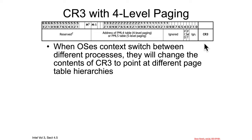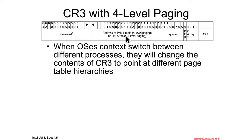You should be aware that when an operating system changes context between different processes — in order to represent different virtual memory address spaces, with different physical memory mapped at potentially even the same virtual address — the operating system is going to be rewriting CR3 each time it's swapping in and out different processes or kernel space context. By changing CR3, there will potentially be many page map level 4s that each point at a bunch of different page directory pointer tables and so forth.